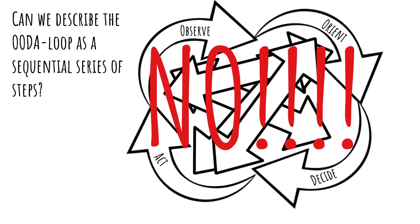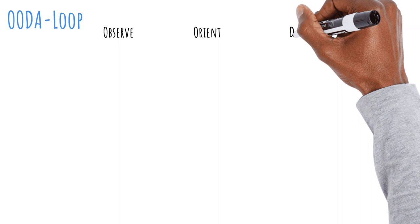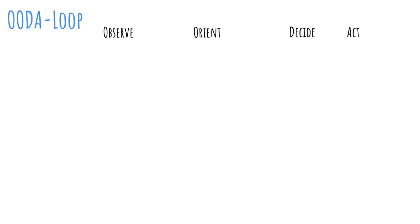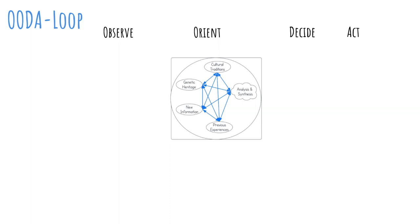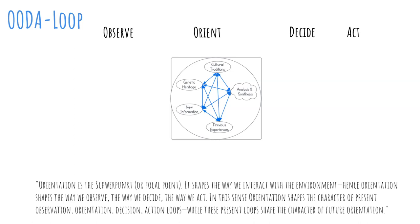Now it's time to describe the OODA loop — be it not the original, but one with some small adaptations. As mentioned in the beginning, OODA originally stood for observation, orientation, decision, action. In recent years the nouns have made way for the verbs: observe, orient, decide, act. These verbs better represent that these are continuous activities. When describing the loop, it is best to start with the central activity: orient. Boyd says of this activity, quote: orientation is the schwerpunkt, or focal point. It shapes the way we interact with the environment. Hence orientation shapes the way we observe, the way we decide, the way we act. In this sense orientation shapes the character of present observation, orientation, decision, action loops, while these present loops shape the character of future orientation.